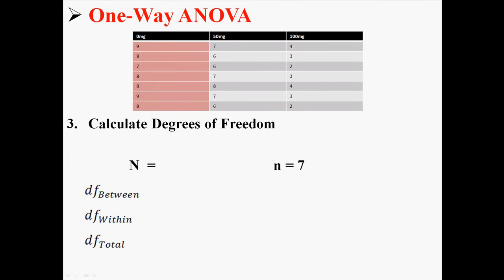And capital N refers to the total number of people in the experiment. So lowercase n is seven. Capital N is 21. We're going to use that to calculate the degrees of freedom and some other things.